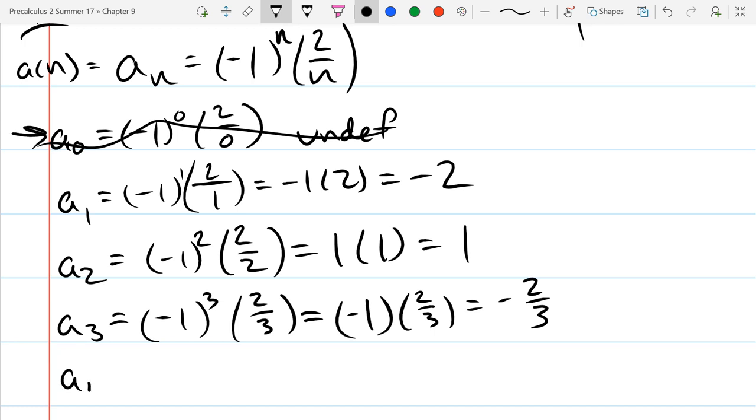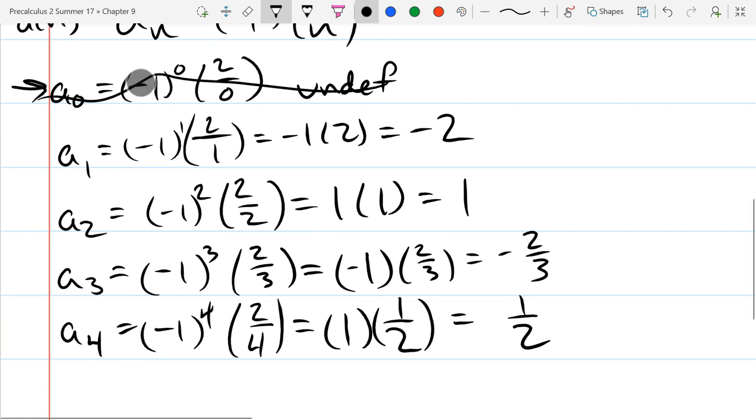So our original term doesn't exist, so we're going to go to the 4th term. Negative 1 to the 4th, 2 over 4, so negative 1 to the 4th, 4 negatives make a positive, 2 fourths is 1 half. So these are the first 4 terms of the sequence.